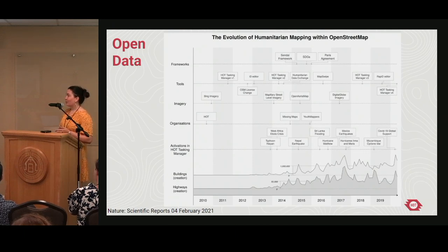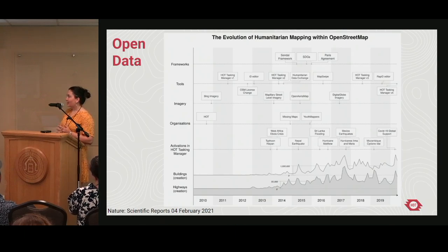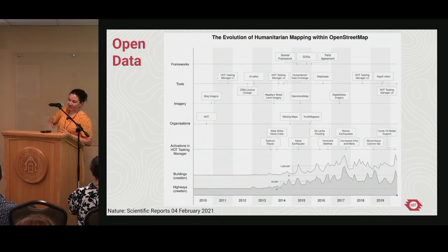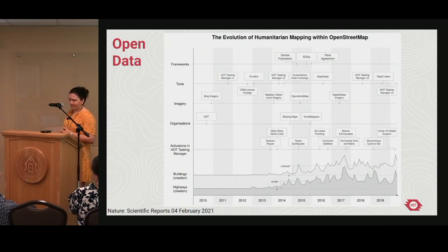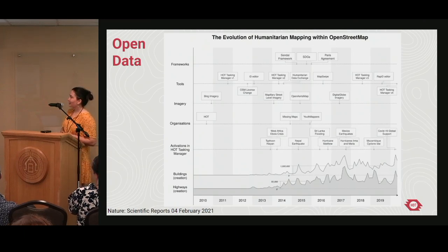Here's some background on the growth of using OpenStreetMap for humanitarian purposes. This is a chart made by colleagues at Heidelberg University in Germany, looking at the growth of OpenStreetMap and how it relates to the sector. At the top you can see those frameworks I mentioned — the Sendai Framework for disaster management, the Sustainable Development Goals, and the Paris Agreement. These align with a lot of growth from HOT and other institutions. We have a Tasking Manager that coordinates contributions to OpenStreetMap, and that has expanded to other tools such as MapSwipe, contributing to a growth in OpenStreetMap through 2020.